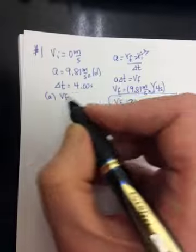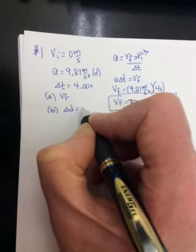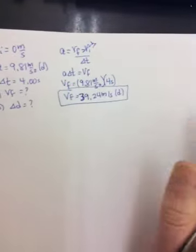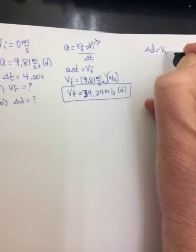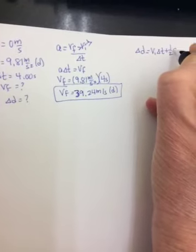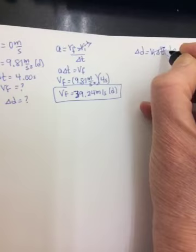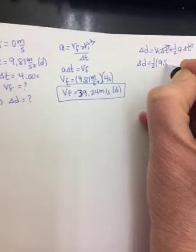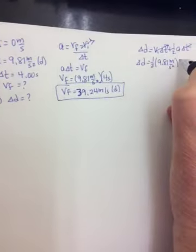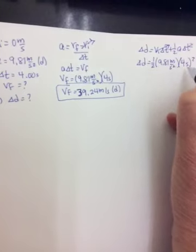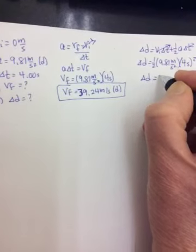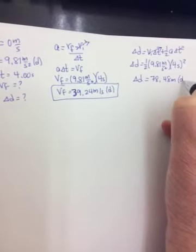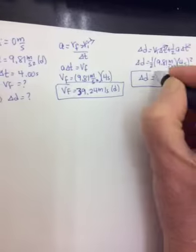Part B says, how far does the brick fall in the first 4 seconds? So now we're looking for delta D. I have VI, I have A, I have delta T. Probably the easiest way to find delta D is to use the delta D equals VI delta T plus one-half A delta T squared equation. This will go to 0 again, because VI is 0. Delta D equals one-half, A is 9.81 meters per second squared, and the time was 4 seconds, which you're going to square. So 4 squared is 16, half of 16 is 8. 8 times 9.81 is 78.48 meters. Works out to be positive, which was what we were calling down. There is number one.